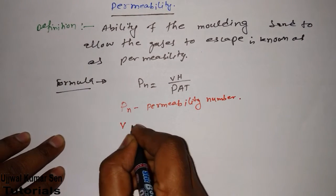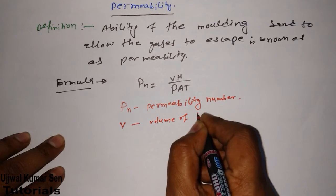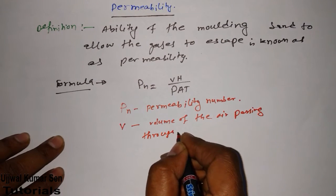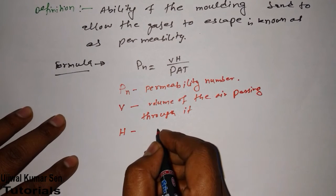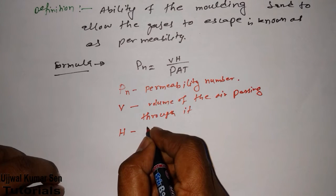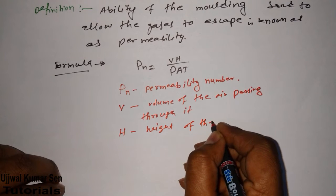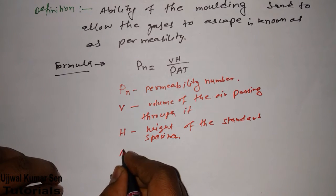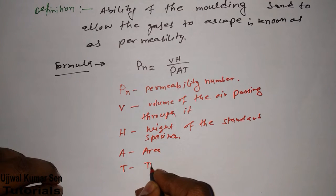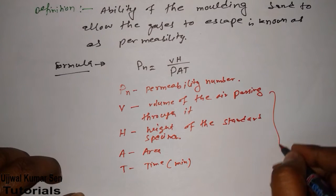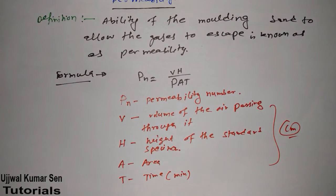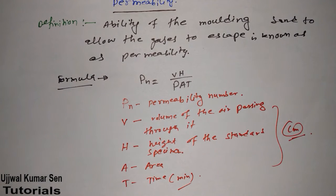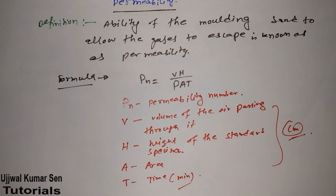V means volume of the air passing through. H is the height of the standard specimen. A is the area, and T is the time — remember, time is taken in minutes, and all lengths are in centimeters. So in this problem we are maintaining centimeters and minutes. Solving a few problems will make this clear.